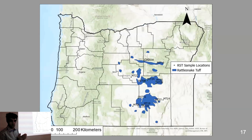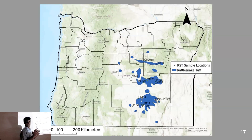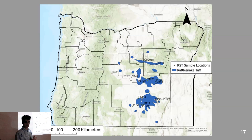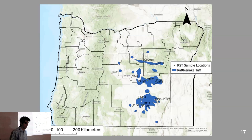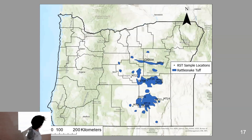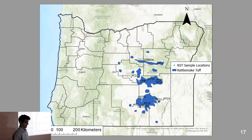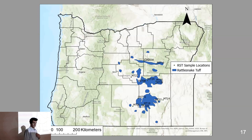This map shows the Rattlesnake Tuff — the blue shapes are the extent of the outcrops as they exist today — and this time I've added the locations of my samples. I had to travel pretty far into very hard-to-get-to places to get enough samples to create a good picture. A lot of samples have already been taken sort of near John Day, which is relatively accessible. But some of the samples down in the south were really hard to get to. Overall, I collected about 40 samples and selected 16 of them for isotopic analysis.